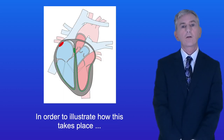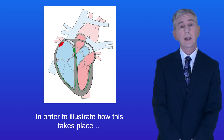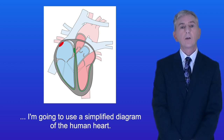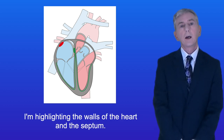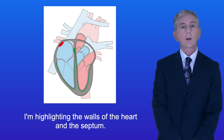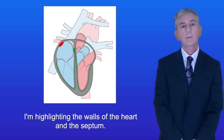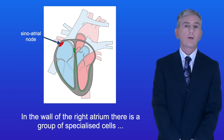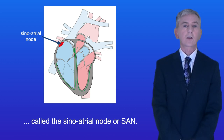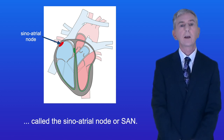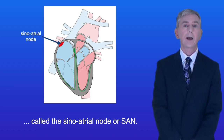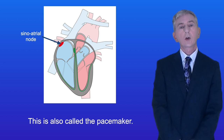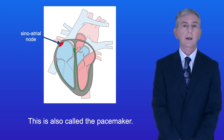In order to illustrate how this takes place I'm going to use a simplified diagram of the human heart, highlighting the walls of the heart and the septum. In the wall of the right atrium there's a group of specialized cells called the sinoatrial node or SAN. This is also called the pacemaker.